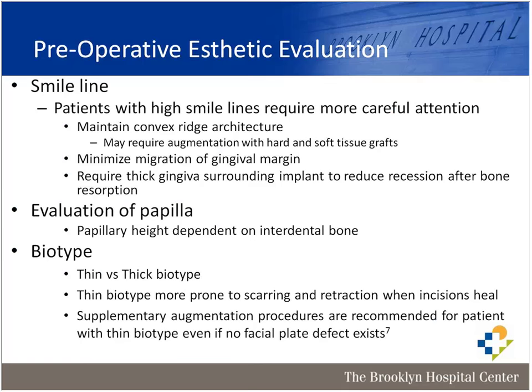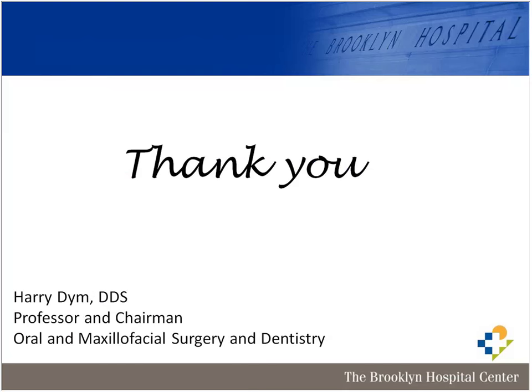Evaluate the papilla — if there's been adjacent vertical bone loss from past periodontal disease, patients need to be told about the black triangle in the embrasure space. The biotype is very important: thick gingiva versus thin gingiva. The thinner the gingiva, the more likely you'll get gingival marginal recession. If your buccal plate is thin and resorbs, you may see gray of the implant showing through — you may need preoperative gingival thickening.